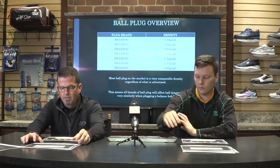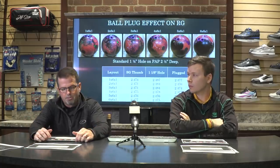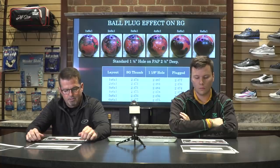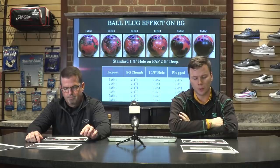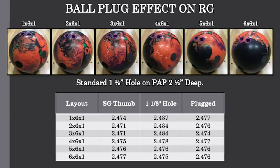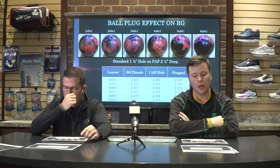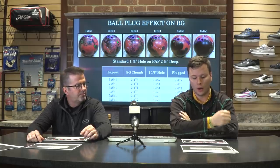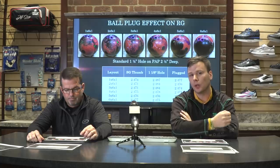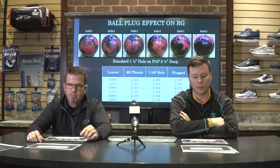So let's talk about how ball plug affects the RG. We have six different Supersonic bowling balls. What we did was a one-inch difference in pin-to-PAP distances — this was for a larger test of ball motion, but it also works for our ball plug test here because we're going to see how the dynamics of the bowling ball are changed with ball plug at different distances from the pin.